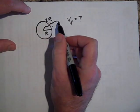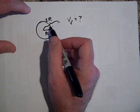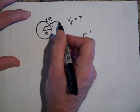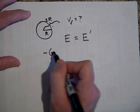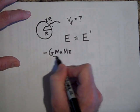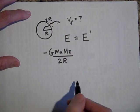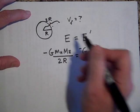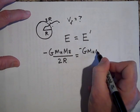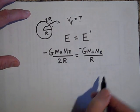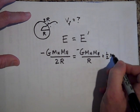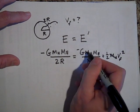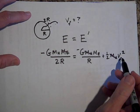You can't solve this with Newton's laws because the acceleration isn't constant. But you can solve it with E equals E prime. At the start, there's no kinetic energy, only potential energy: negative G times mass of the hammer times mass of the Earth all over 2R. This equals the potential energy just before impact — negative G times m times M_Earth all over R — plus one half m v_final squared. The mass of the hammer cancels.